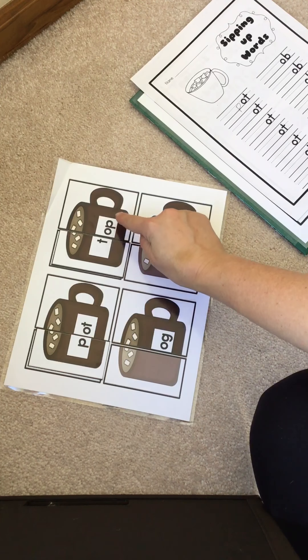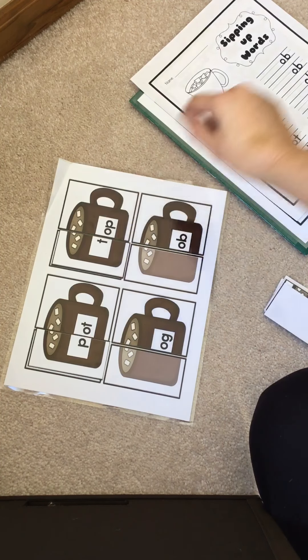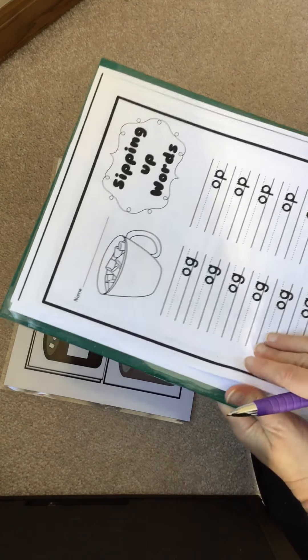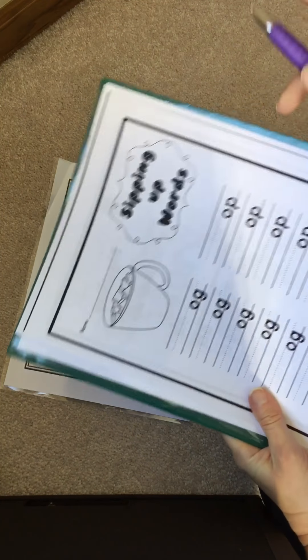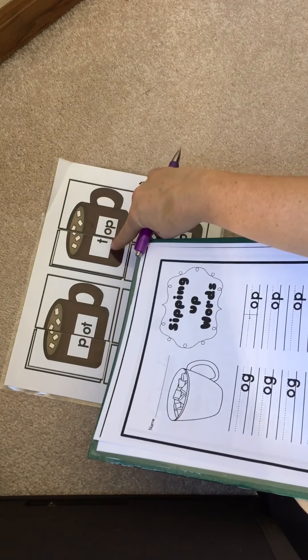'T-O-P, top, top,' yes, that's a word. Well, I got to put it over here where it's the 'op' word, so I need to put it 'tuh tuh O-P.' See how it matches? T-O-P, T-O-P. Okay, let's do another one.